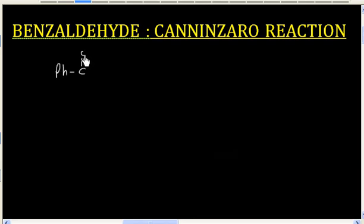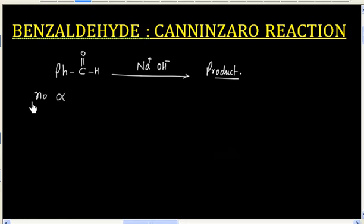So this molecule is benzaldehyde and this is reacting with NaOH. What will be the product in this reaction? Benzaldehyde has no alpha hydrogen. So this will undergo Cannizzaro reaction.